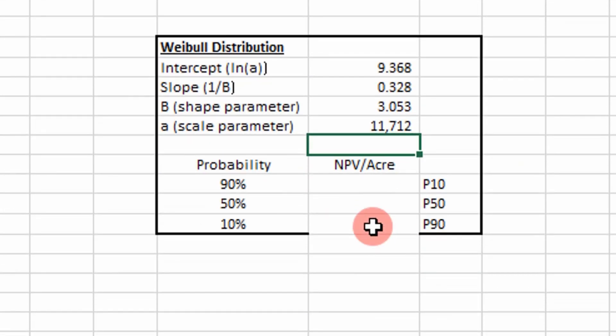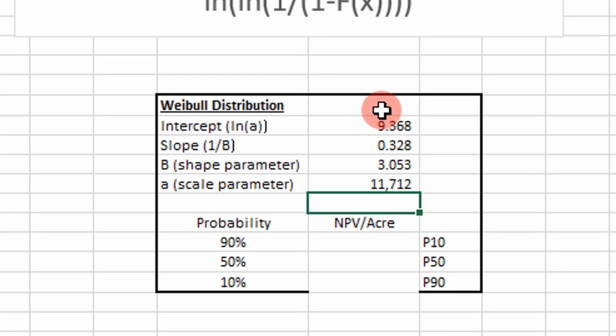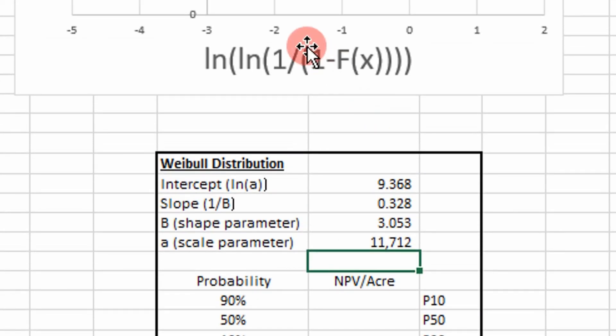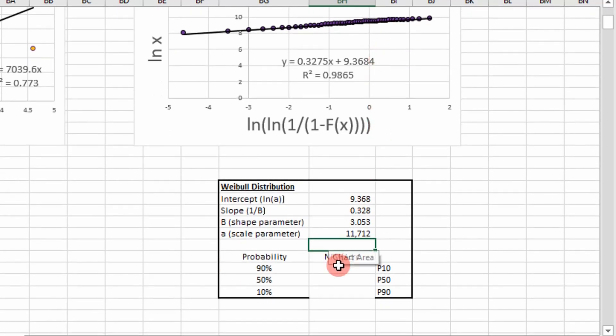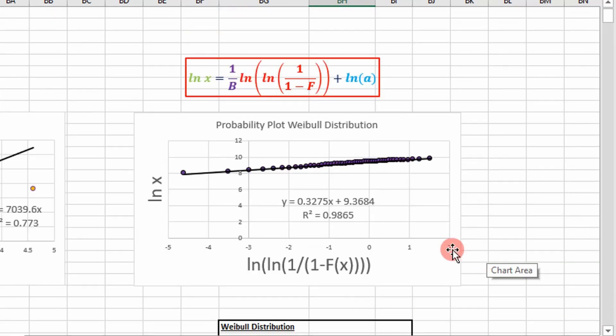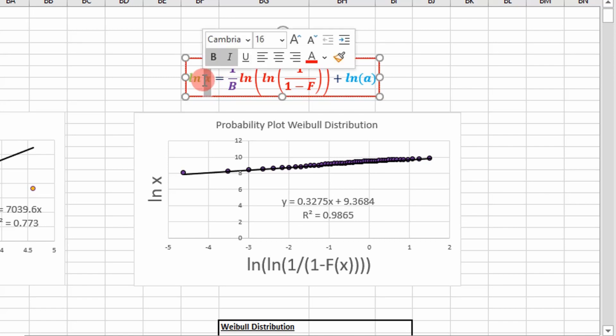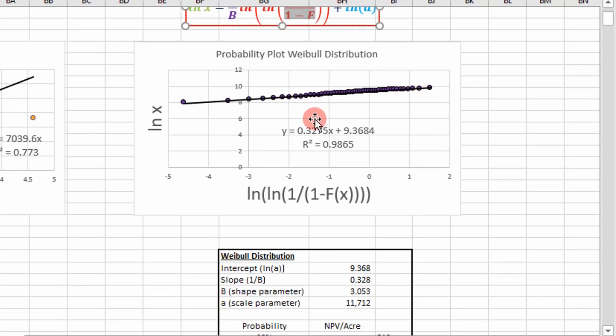Now that we have our shape parameter and our scale parameter, we've determined what Weibull distribution best models our data. Now we can determine p10, p50, and p90 using our best fit line. We're calculating this value given a cumulative probability f.